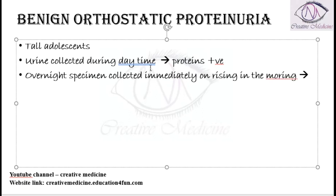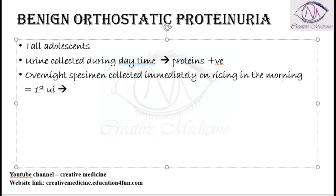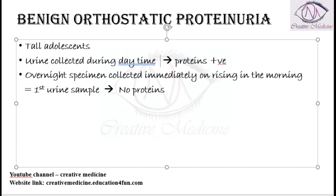If the urine is collected during the daytime, proteins are positive. When you collect the urine immediately after rising in the morning — the first urine sample — there are no proteins. Proteins are absent in this sample. The sample collected during the daytime is called the ambulant sample, when the patient is moving, and proteins are present.